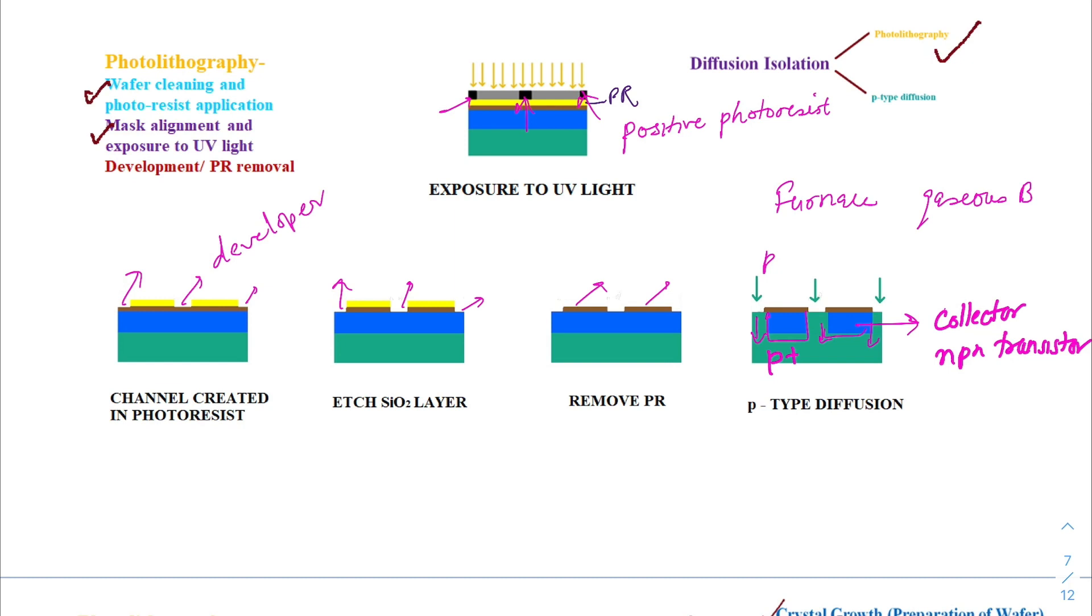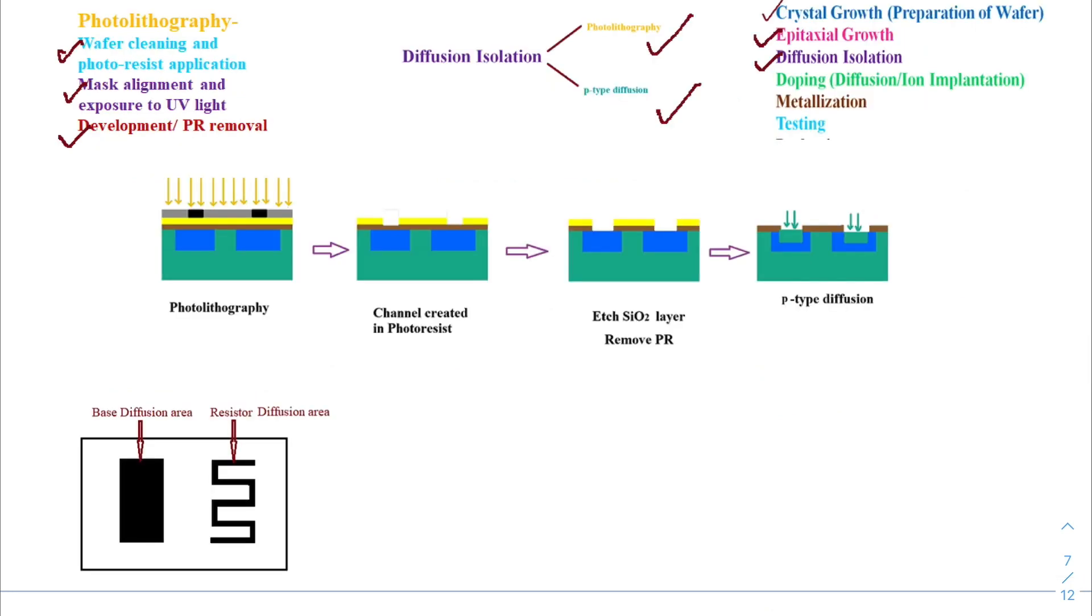Now, if we want to create base of NPN transistor, we form the SiO2 layer again. After the formation of SiO2 layer, the process of applying photoresist, masking, photolithography and selective etching takes place, then P type material is diffused through a window above the N type islands. This will form the base for an NPN transistor and we can have a resistor in the adjacent island. The base of the transistor will be a smooth rectangular area while for resistor it will be a zigzag area to produce necessary resistance.